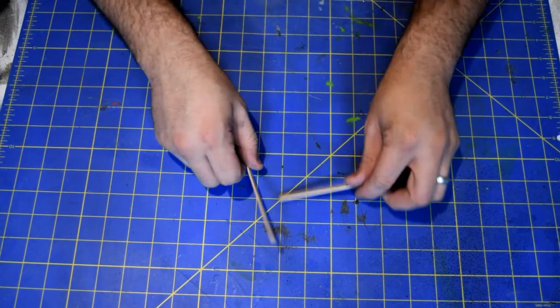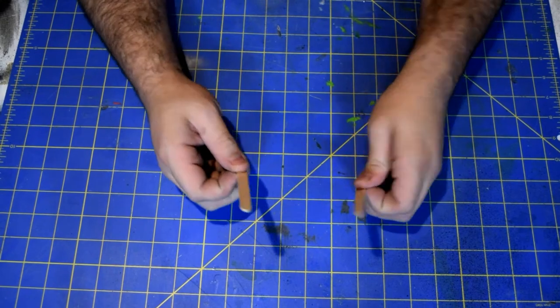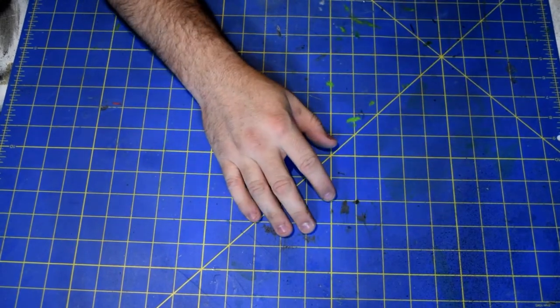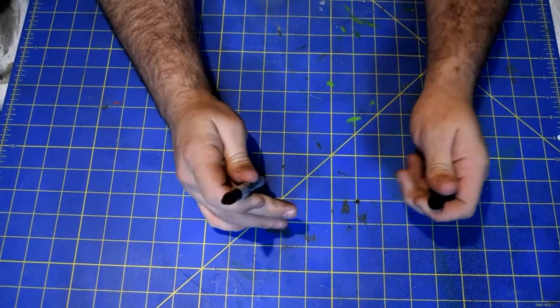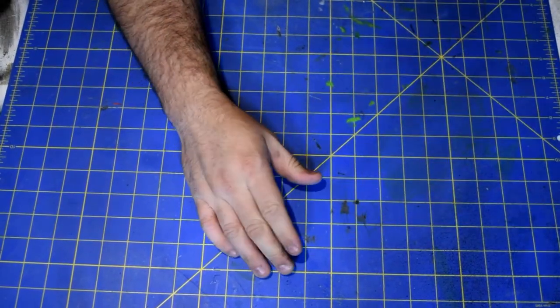You're also going to need a few popsicle sticks. Don't need a whole lot. You're just going to need a couple of these and then you're also going to need a sharpie. Make sure that you have a handy dandy sharpie ready to go, ready to use.